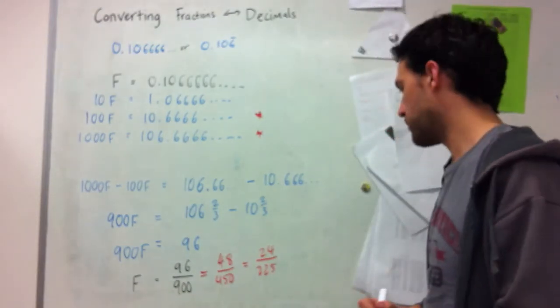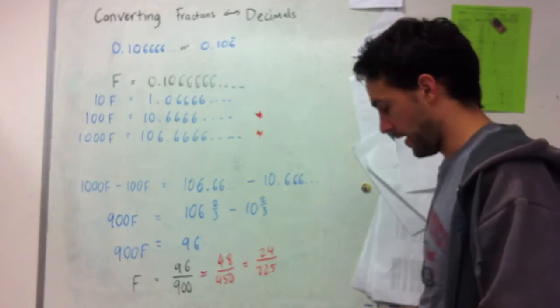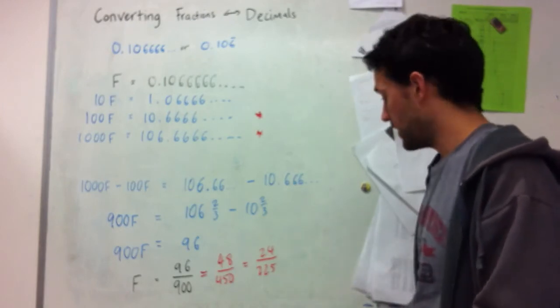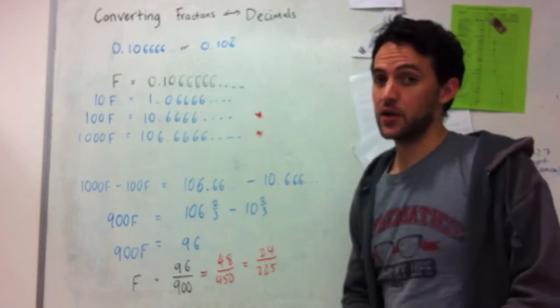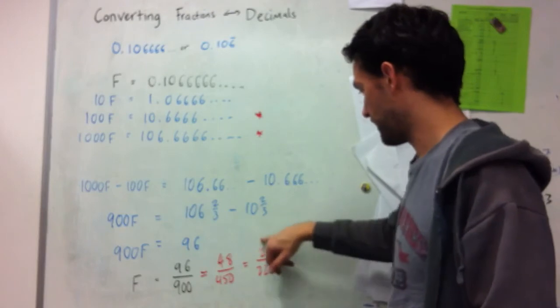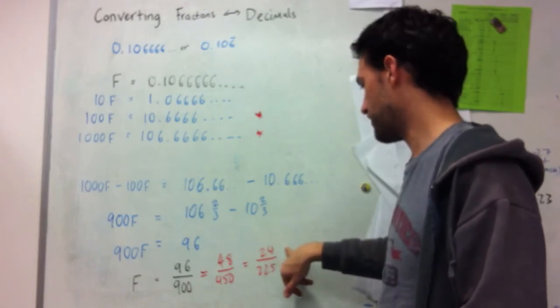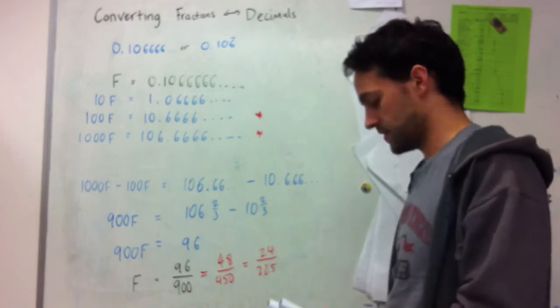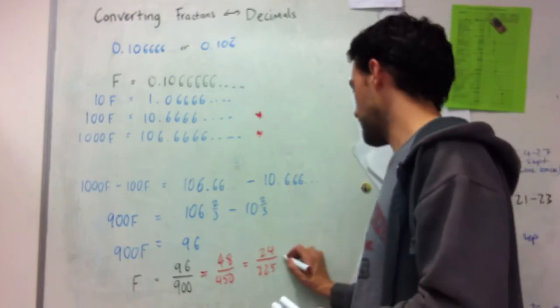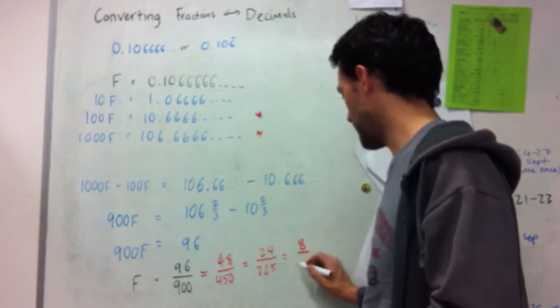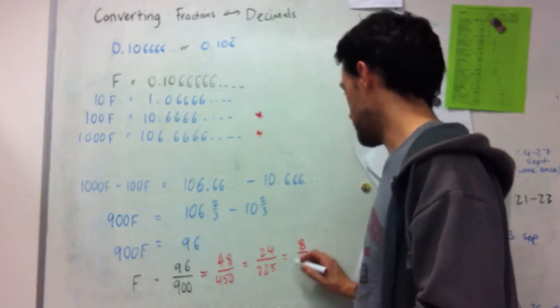And then at this point I need to think about whether these are relatively prime or not. I can do that in terms of looking at these. I've got 2 and 4, so that's divisible by 3. And then 2 plus 2 plus 5 is also 9, so that's divisible by 3. So I can still go further and make it 8 divided by 75.